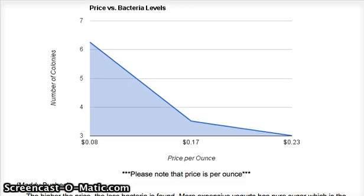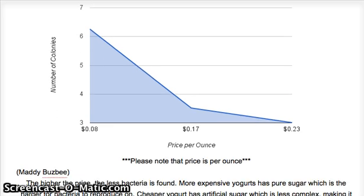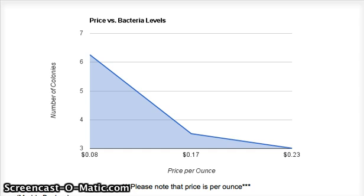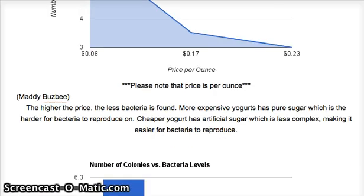For our expected graph on price versus bacteria level, we think that the higher the price, the less bacteria we will find. That's because more expensive yogurt has pure sugar, which is really hard for the bacteria to reproduce on, but cheaper yogurt has artificial sugar, which is simple and easy for the bacteria to reproduce on.